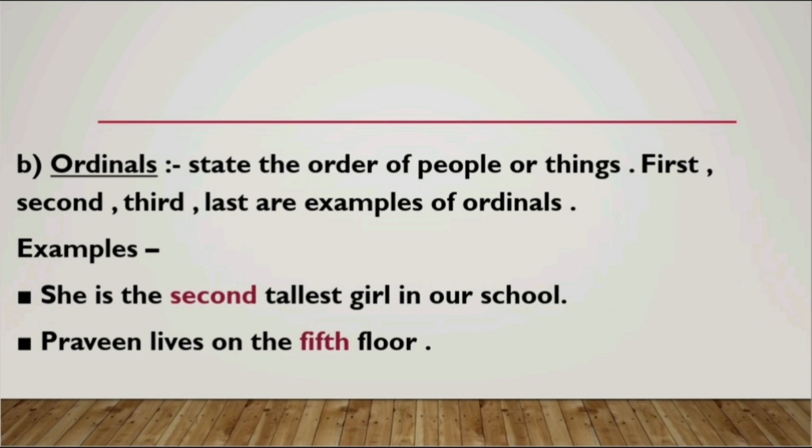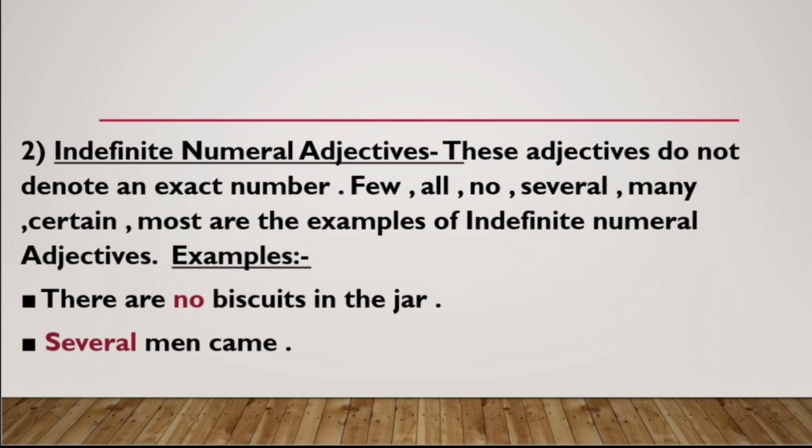Similarly, the next example is: 'Praveen lives on the fifth floor.' Which floor? The fifth floor. So ordinals describe the order or arrangement in which people or things are positioned. That covers the two types of definite numeral adjectives — cardinals and ordinals.